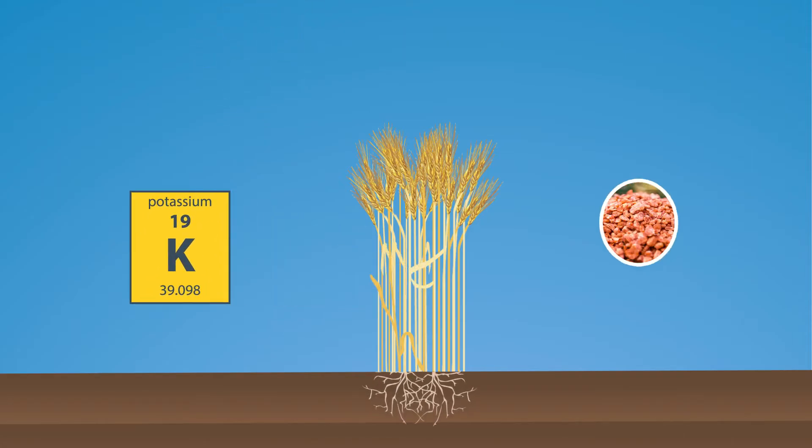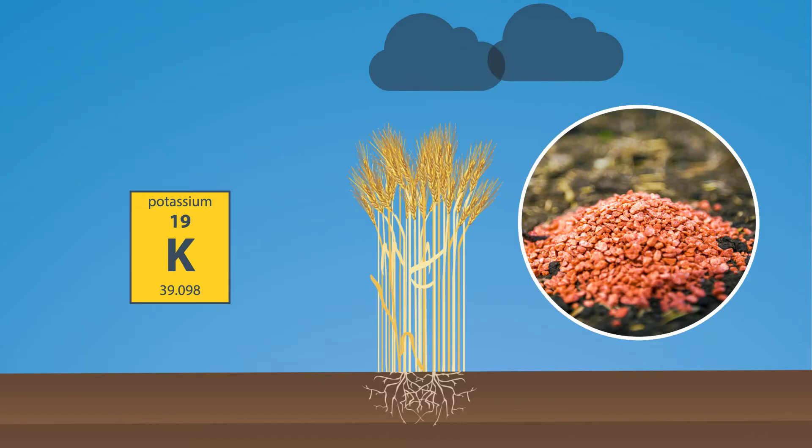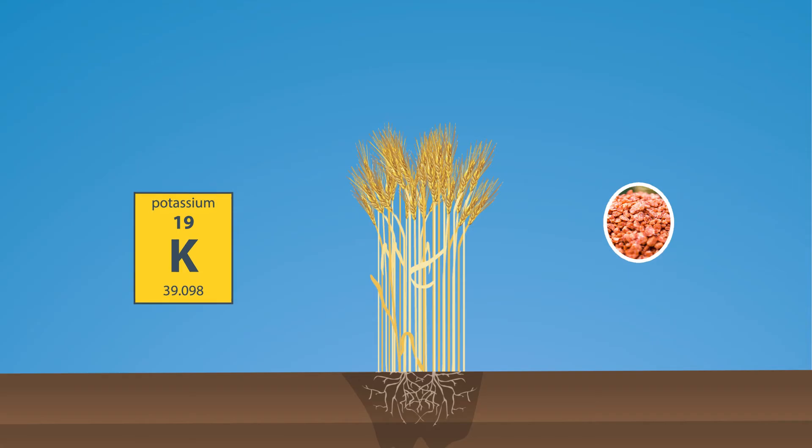Potassium is often called the protector. Potassium protects our plants against diseases and helps them stay healthy when it is cold or dry because it helps move nutrients and water in the plant to where it's needed most.